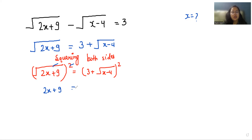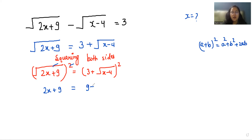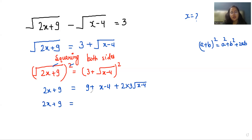So 2x + 9 equals — and here we are going to use the famous identity (a + b)² = a² + b² + 2ab. So it becomes a² which is 3² = 9, plus b² which is (x - 4), the square root squares eliminate to give x - 4, plus 2 times 3 times square root (x - 4).